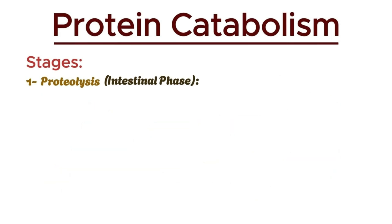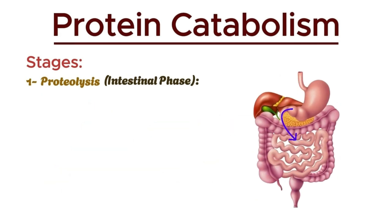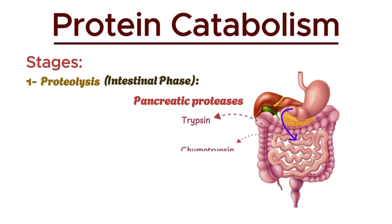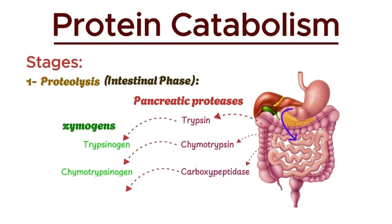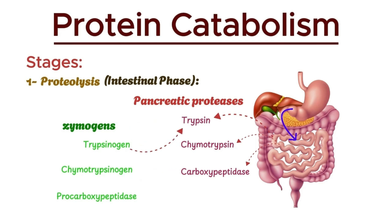As the partially digested proteins move into the small intestine, they encounter pancreatic proteases such as trypsin, chymotrypsin, and carboxypeptidase. These enzymes are also secreted as inactive zymogens and are activated in the intestinal lumen. Trypsinogen is activated to trypsin by the enzyme enterokinase, and trypsin then activates the other proteases.